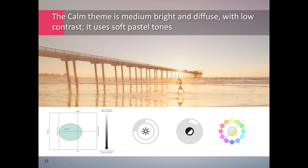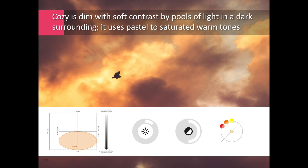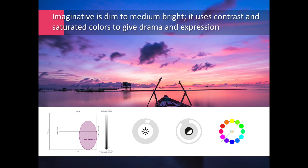Calm is medium bright and uses a minimum of contrast in favor of soft diffused light. It uses soft pastel tones. The Cozy theme is dim with soft contrast by pools of light in a dark surrounding, using pastel to saturated warm tones. The Imaginative theme is dim to medium bright and uses sharp contrast by silhouetting for a more dramatic effect, with more saturated colors.